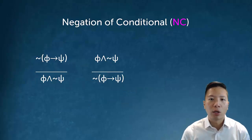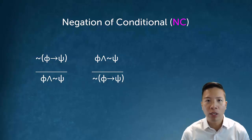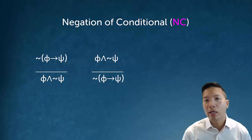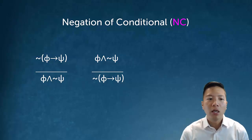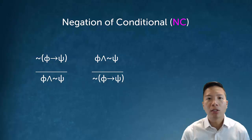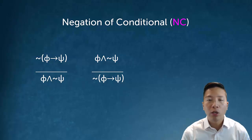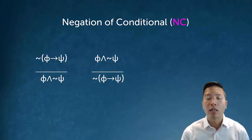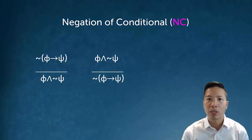The first negation rule is called negation of conditional. It's very straightforward: if I have the negation of a conditional — negation of phi arrow psi — I can then immediately conclude phi and not psi. This makes sense because a negation of a conditional means the conditional is false, and the only way a conditional is false is when the antecedent is true and the consequent is false, which is exactly what the conclusion says.